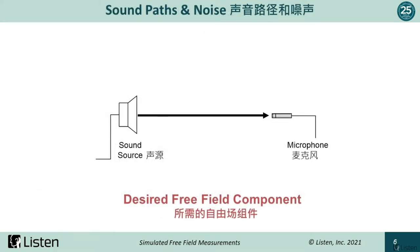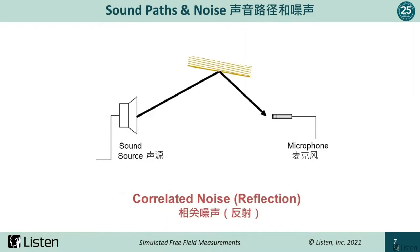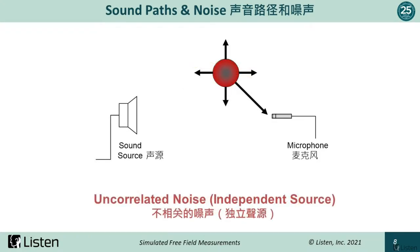If we want to compare loudspeakers, we typically want to measure only the direct sound and eliminate the room influence, including reflections and background noises. In practice, this may be difficult to achieve without a specially treated room or special signal processing. In an ordinary room, there are reflections which have a longer signal path than the direct sound. Therefore, they arrive attenuated later in time and correlated to the direct sound. There are also uncorrelated noises such as fans, people talking, and other background noises, which can be mitigated with proper choice of test techniques.